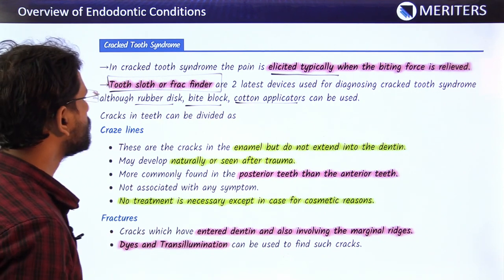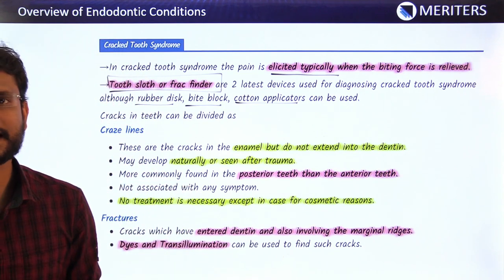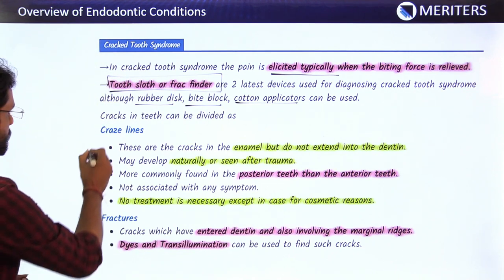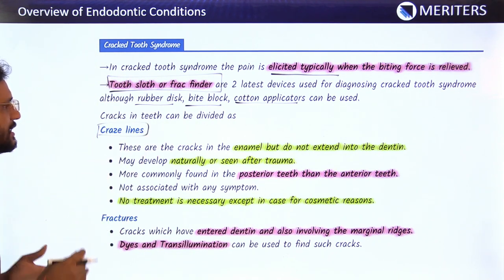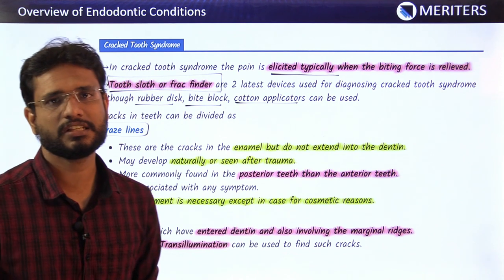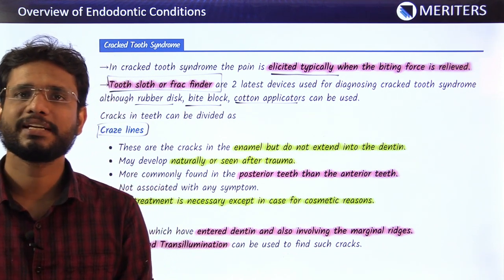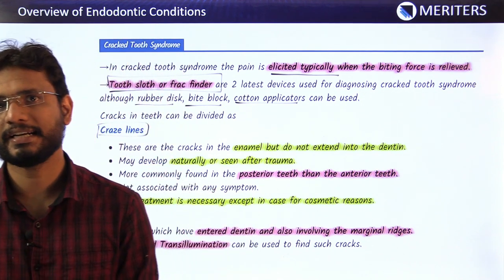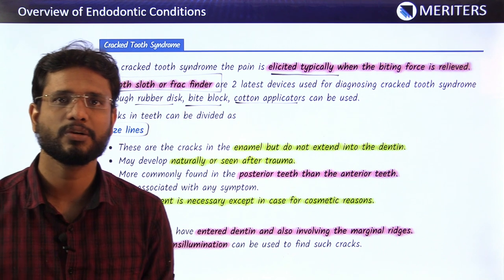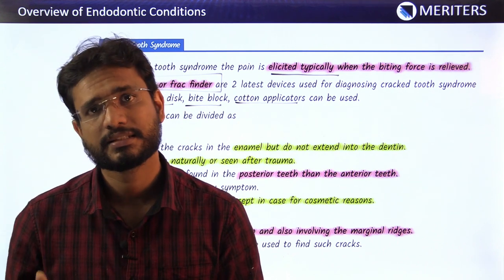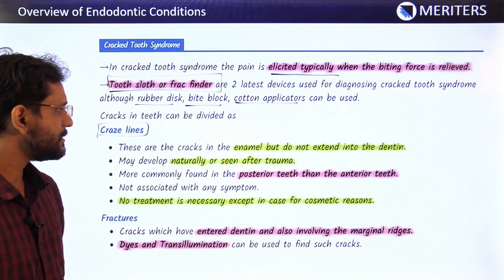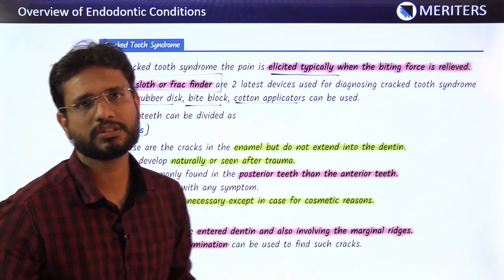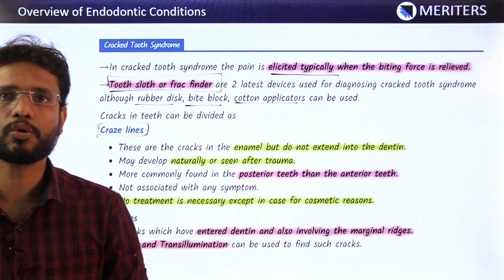There are basically many types of cracks that can occur in a tooth. First are craze lines — these are simple superficial cracks limited only to the enamel and not going towards dentine. Since the dentine tubules remain intact and are not opened, there are no symptoms; the tooth is asymptomatic. Craze lines occur naturally or sometimes due to traumatic or occlusal forces.